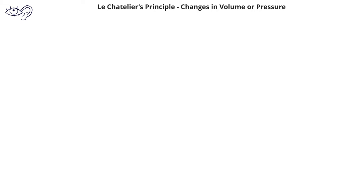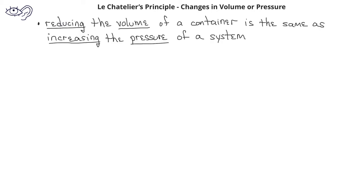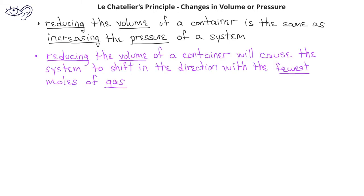When we look at Le Chatelier's principle as it applies to a system in equilibrium which has a volume or pressure change, it's important to remember the relationship between volume and pressure. In short, reducing the volume of a container is the same as increasing the pressure in the container. If we reduce the volume of a container, this will cause the system to shift in the direction with the fewest moles of gas.